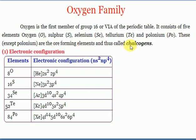Except polonium, the rest of the elements are called chalcogens. Chalcogen stands for 'ore-forming materials.' Everywhere we find iron oxide, zinc oxide, copper oxide - all elements react with oxygen and form ore-type materials. Sulfides like galena (mercury sulfide) are also ore-forming materials. So oxygen, sulfur, selenium, and tellurium are all ore-forming materials, hence called chalcogens.